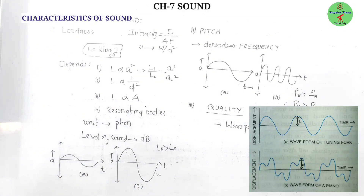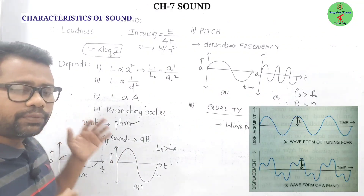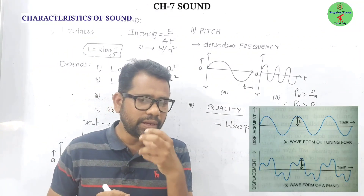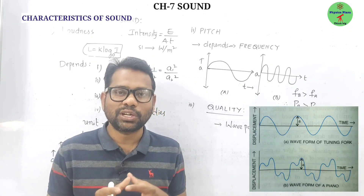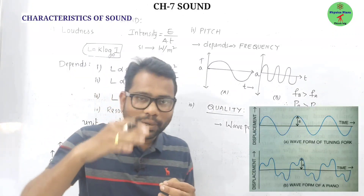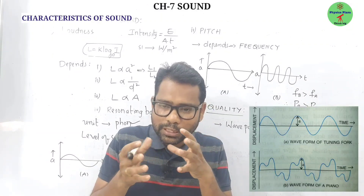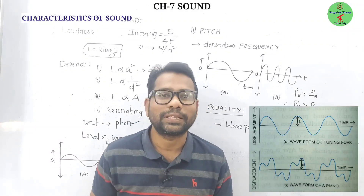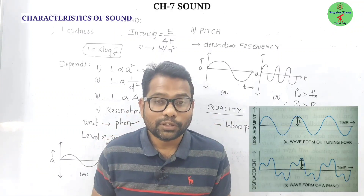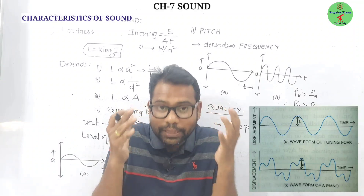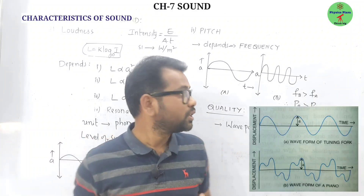The unit of loudness is phon, but the level of sound is measured in decibels. If the sound level exceeds 140 decibels, it causes noise pollution. Music is sound produced in a rhythmic way, giving a pleasant feel, whereas noise is sound produced in a disorderly manner causing irritation and potential health issues.